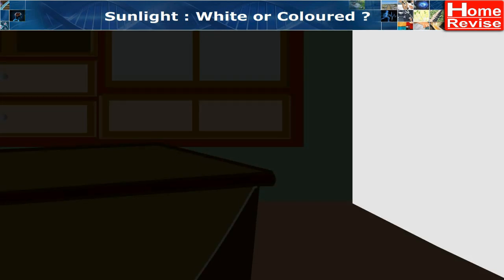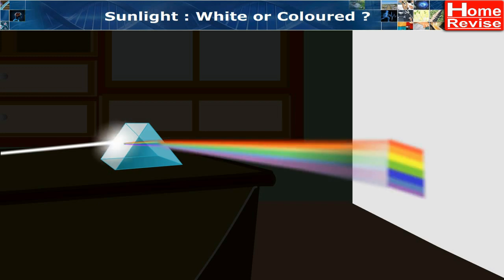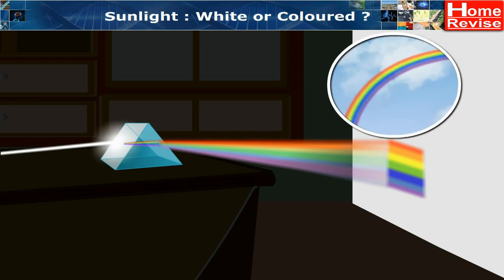Let us perform an activity to investigate this. Place a glass prism on a table in a dark room such that a narrow beam of sunlight through a small hole in a window falls on one surface of the prism. Let the light coming out of the other surface of the prism fall on a white sheet of paper. You will see colors similar to those in the rainbow. This activity shows that white light consists of seven colors.